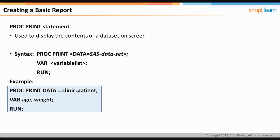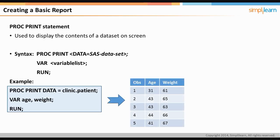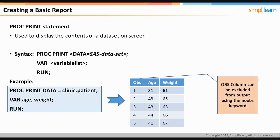In the example shown, the data set patient is displayed in the output using the PROC print statement. We have selected only the variables age and weight from all the variables present in this data set. You can observe that SAS introduces a column called OBS on its own in the output. You can also exclude this column from the output by specifying the NOOBS keyword after the data set name in the PROC print statement.